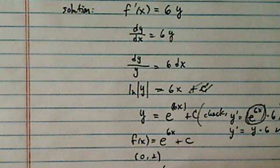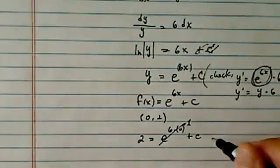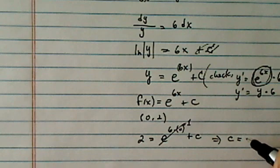So 2 is equal to e, 6 times 0, plus c. This one gets to be 1. e to the 0 is 1. So we see that c is actually equal to 1.